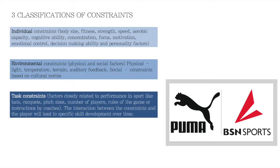Let's look at three classifications of constraints. Individual constraints include body size, fitness, strength, speed, focus, and motivation. Environmental constraints include things like whether the field is bumpy, whether it's turf, whether it's super hot or cold. Task constraints are things like the equipment you're using, the size of the pitch, the number of players, whether there are plus players or not.